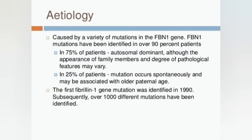The first fibrillin-1 gene mutation was identified in 1990. There have been different variations of this mutation, but the most important thing to remember is the gene name: FBN1. This is very important for your exams — in MCQ questions they will ask the etiology or cause of Marfan syndrome and give you different gene names to choose from.